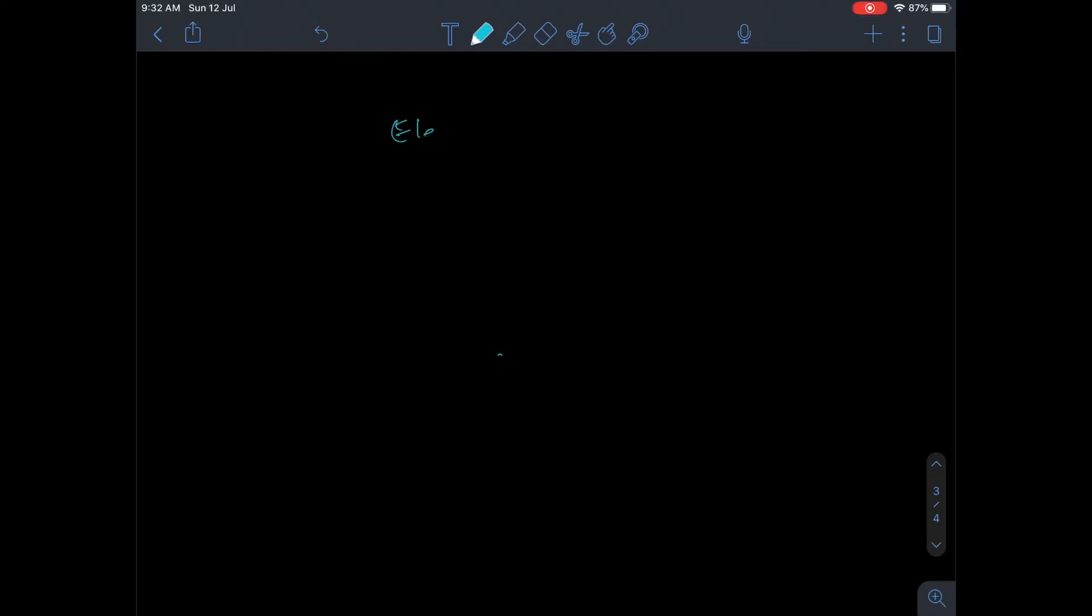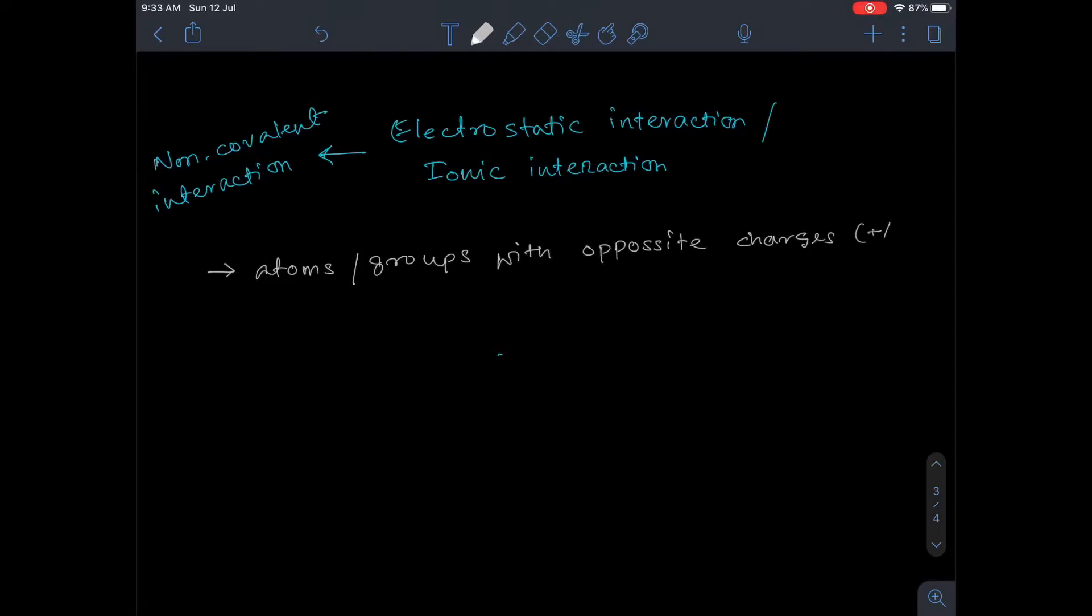Hey friends, welcome back. In today's video we'll be discussing electrostatic interaction or ionic interaction or ionic bond. Ionic bonds are formed due to the attraction between atoms or groups with opposite charges. A charged group on a substrate can attract an oppositely charged group on an enzyme. These are non-covalent interactions.